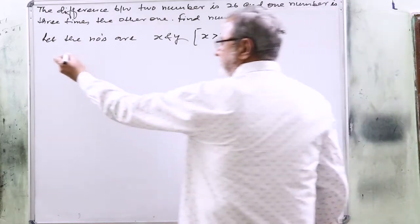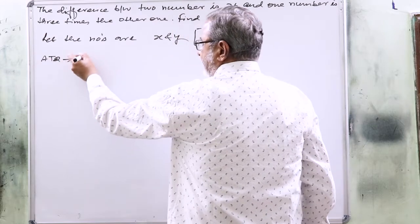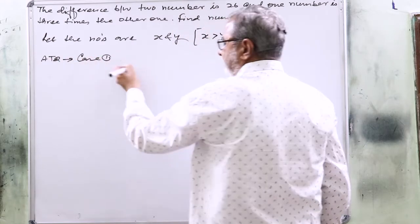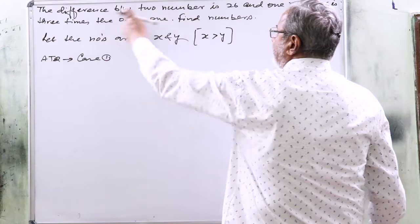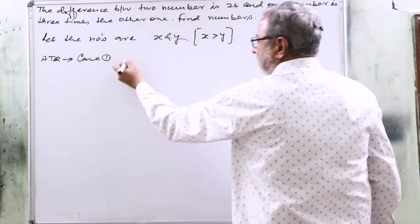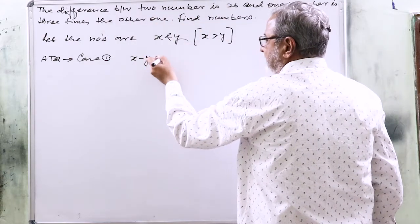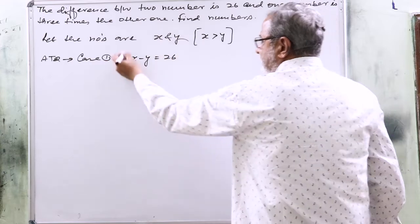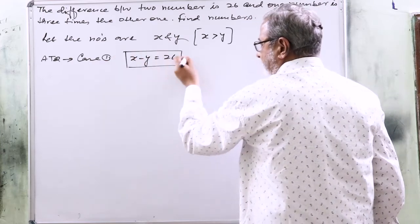So according to question, case 1: what is that? Difference between two numbers is 26. So x minus y equals 26. It is equation number 1.